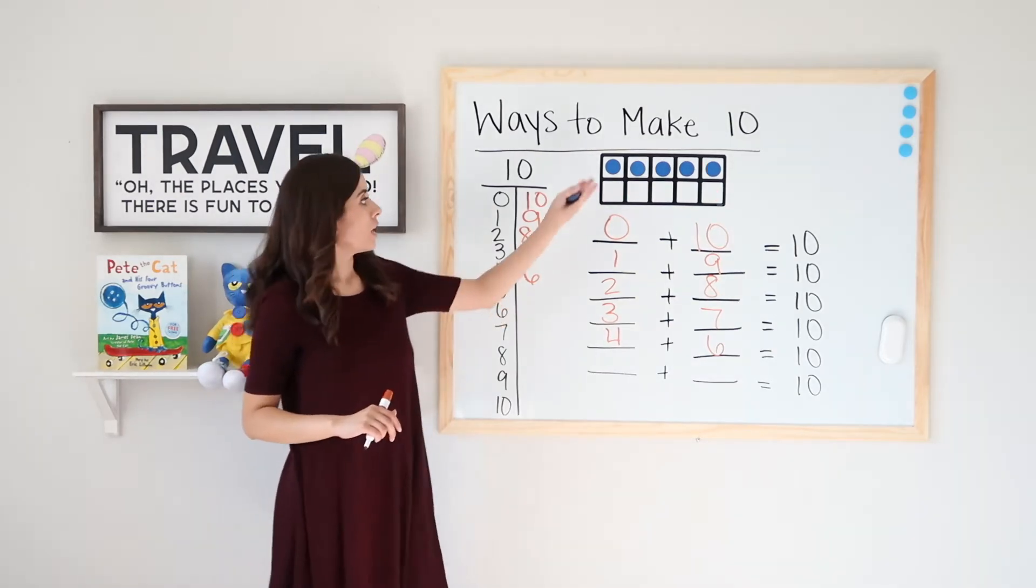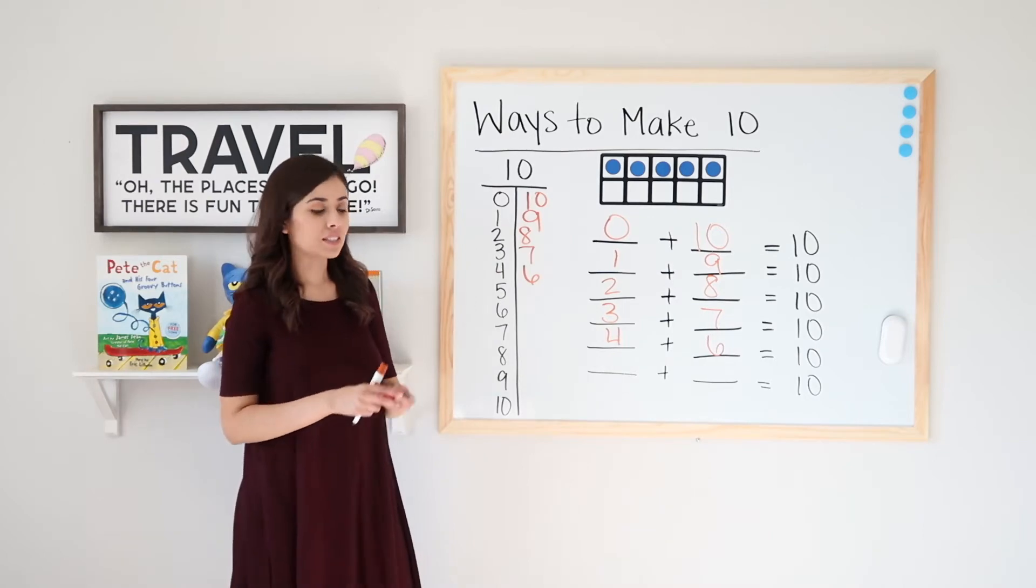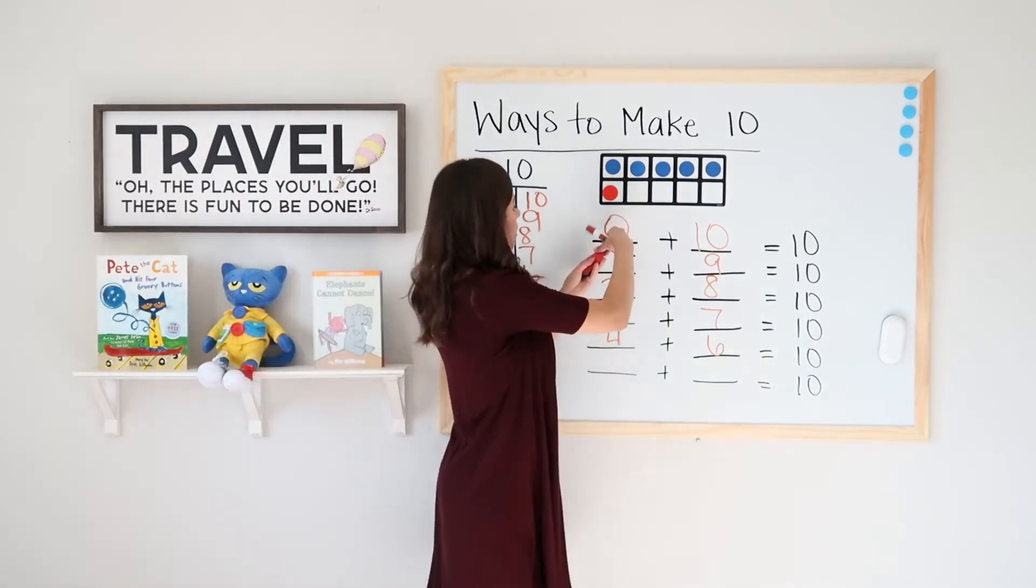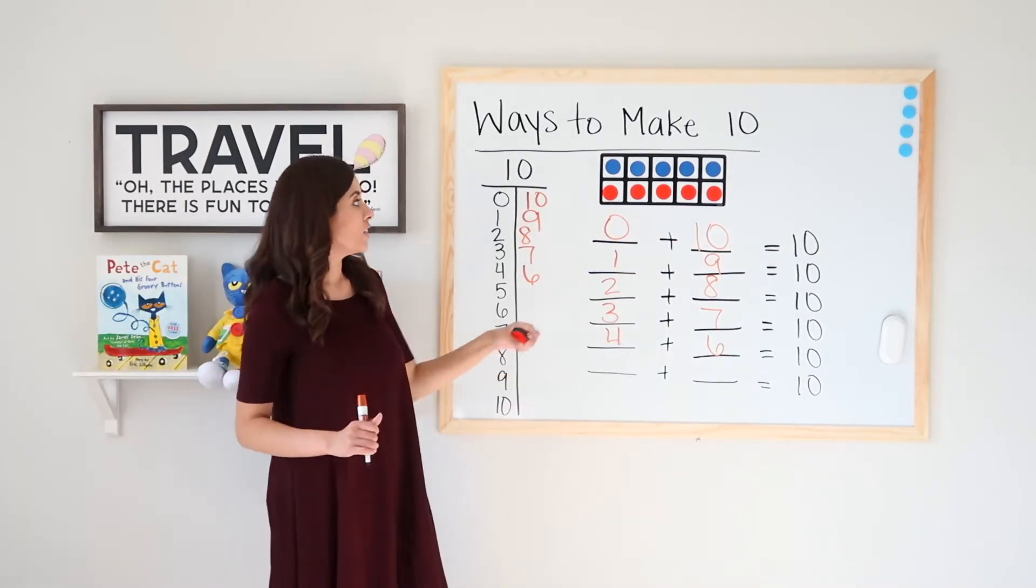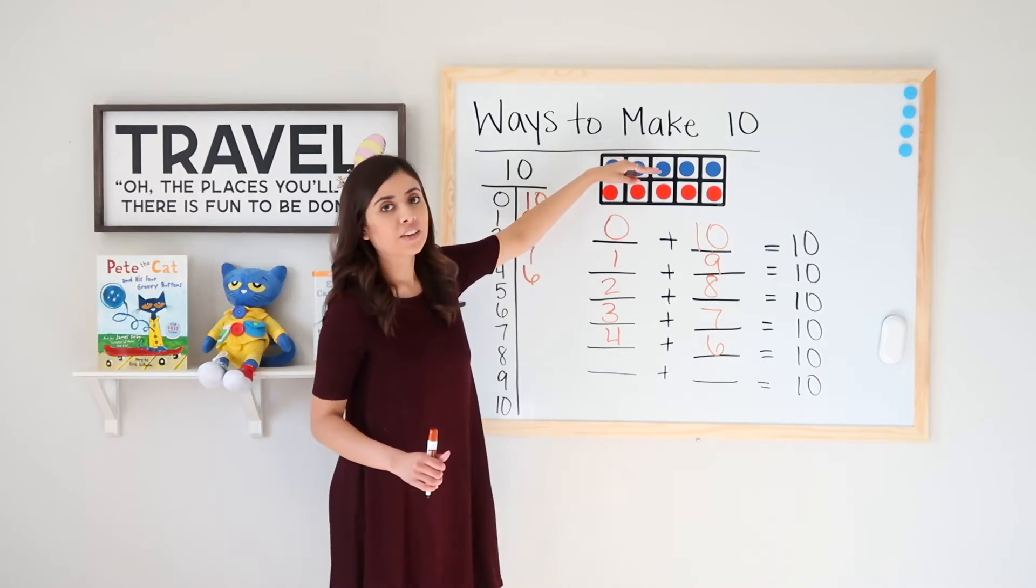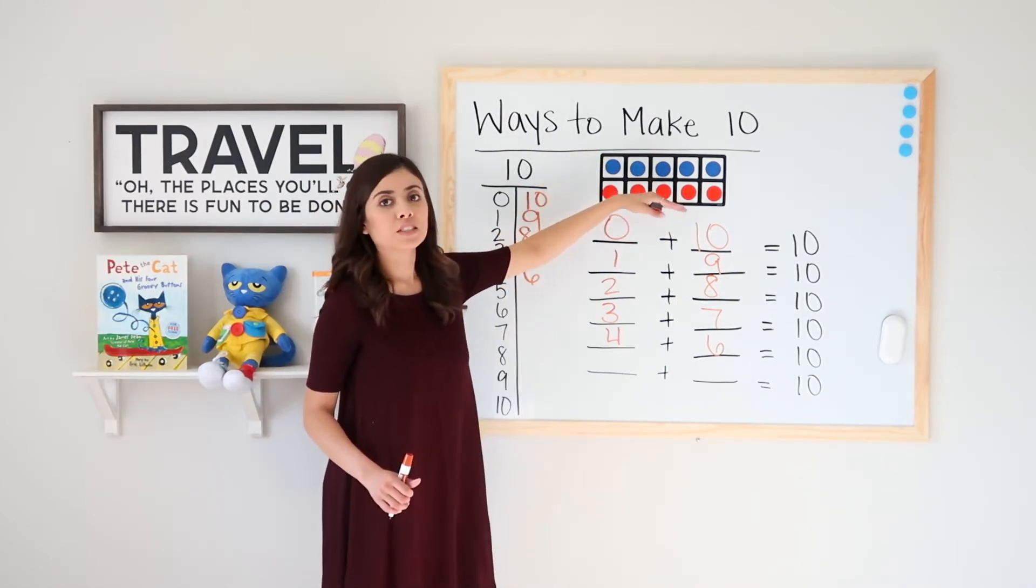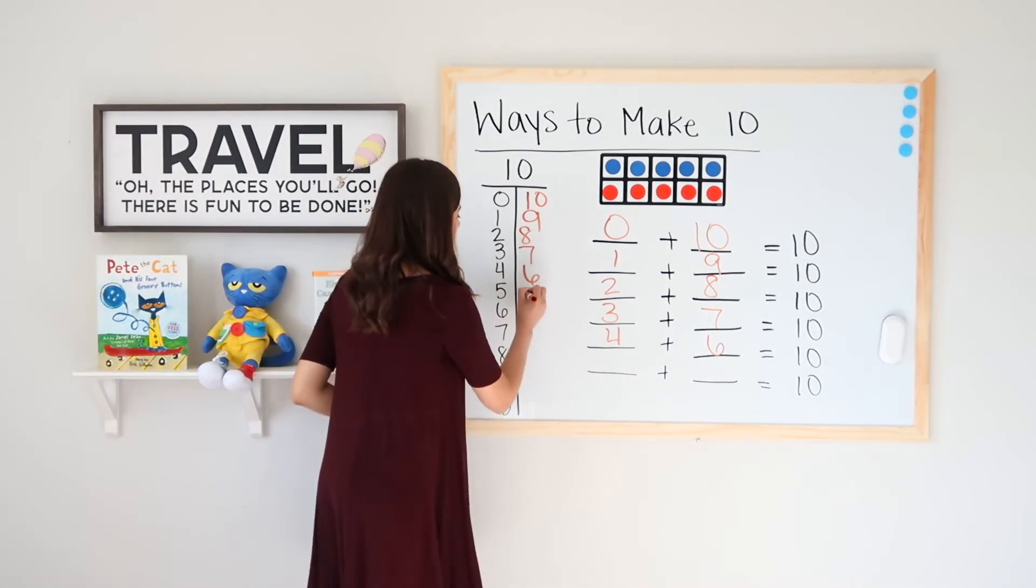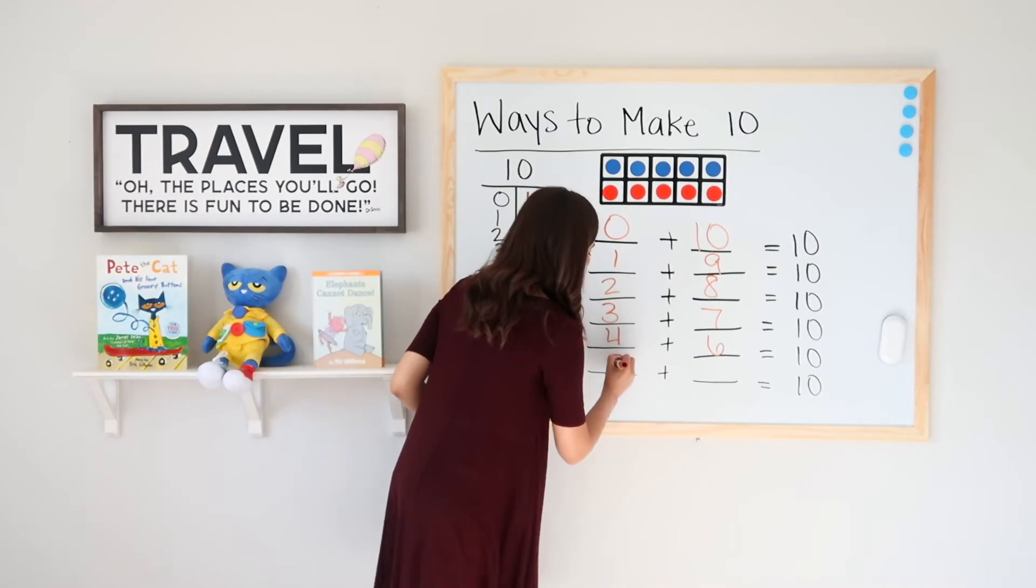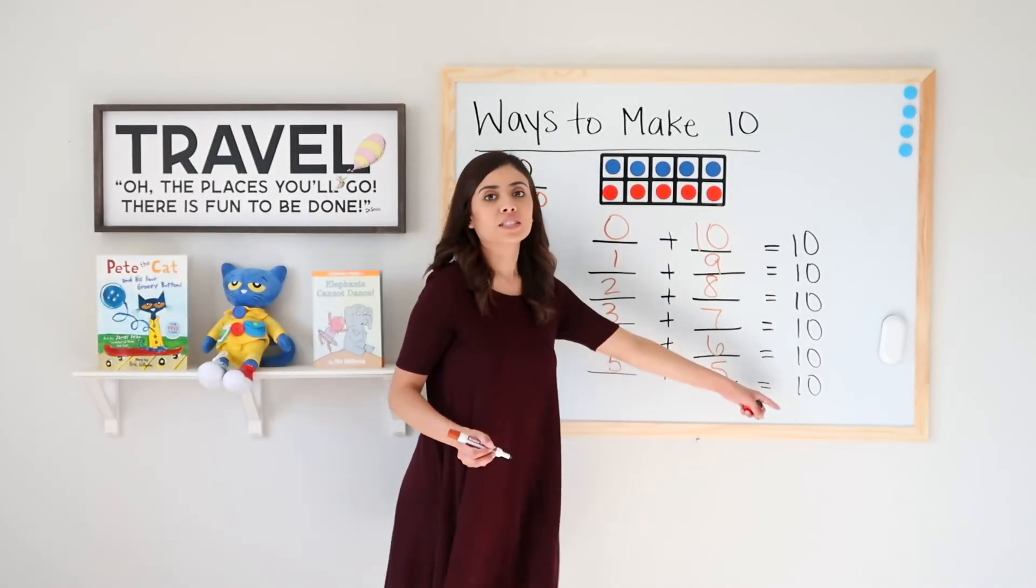Five. I have five blue dots. How many red do I need to get to ten? I don't even have to count this, right? I already know that the top row has five and the bottom row has five. So five blue plus five red equals ten. That means five plus five equals ten.